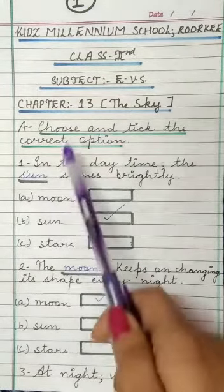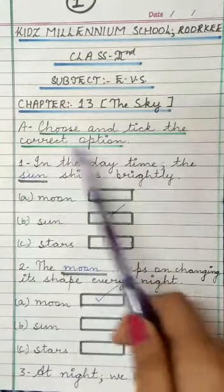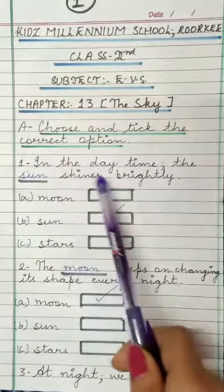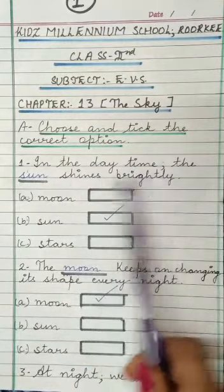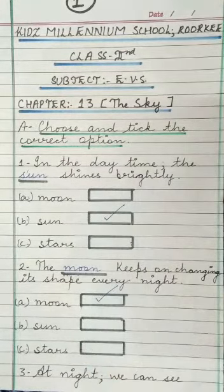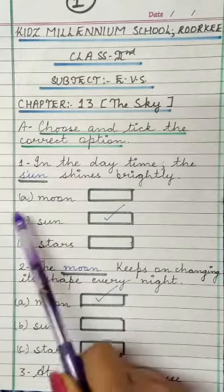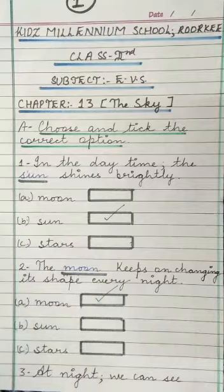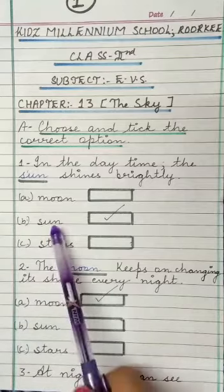First, we have to choose and tick the correct option. First question: in the daytime, the dash shines brightly. Options are A. Moon, B. Sun, C. Stars. So the answer is Sun.